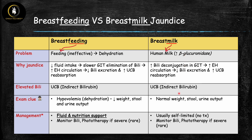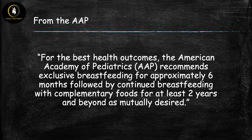The key distinguishing feature on a test question is that these babies do not have dehydration — that is not the pathophysiology here. These babies will have a normal weight and normal stool and urine output, which is how you differentiate this from breastfeeding jaundice. Treatment is usually self-limited, and most neonates can continue to breastfeed as long as bilirubin levels are not too high. Bilirubin is monitored, and if levels get high, phototherapy is used to prevent kernicterus.